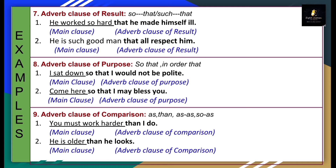Eighth type: adverb clause of purpose. Subordinators: so that, in order that. Example: 'I sat down so that I would not be noticed.' 'I sat down' is the main clause. 'So that I would not be noticed' is the adverb clause of purpose. Another example: 'Come here so that I may bless you.' 'Come here' is the main clause. 'So that I may bless you' is your adverb clause of purpose — the purpose of coming here is to be blessed.